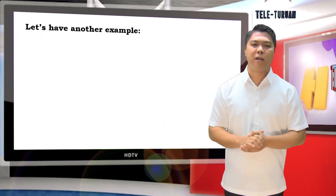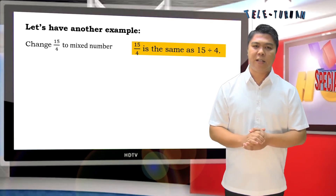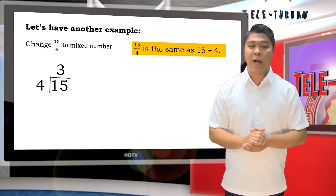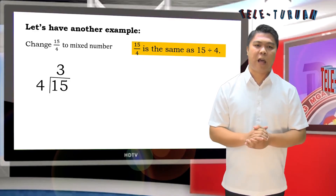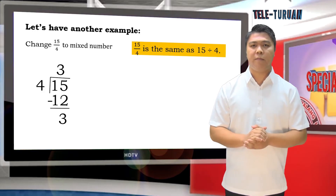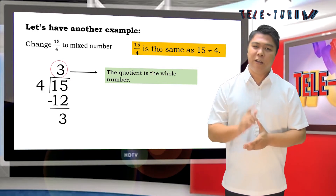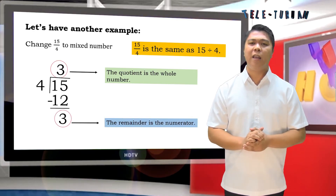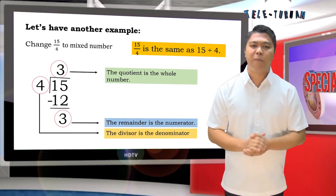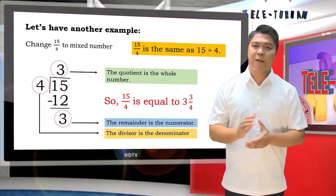Let's have another example. Change 15/4 to a mixed number. 15/4 is the same as 15 ÷ 4. 15 ÷ 4 = 3, with 3 × 4 = 12, and 15 − 12 = 3. The quotient 3 is the whole number, the remainder 3 is the numerator, and the divisor 4 is the denominator. So 15/4 = 3 and 3/4.